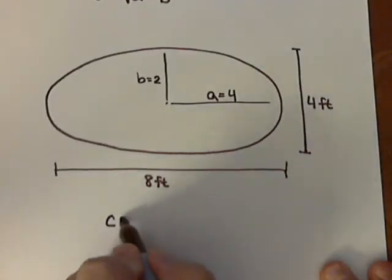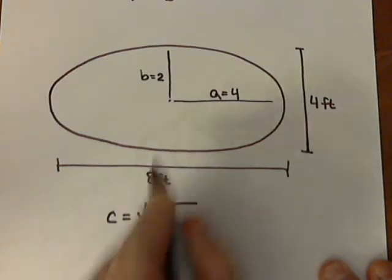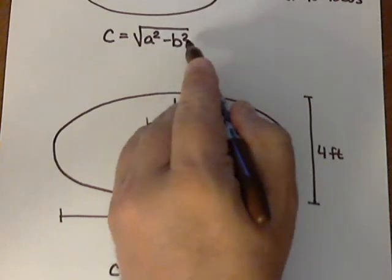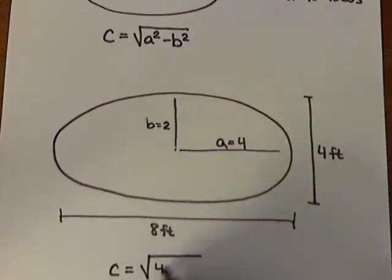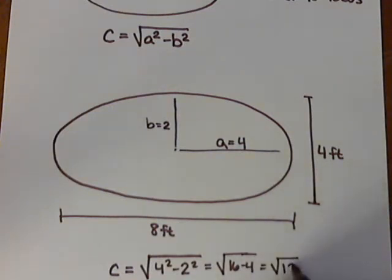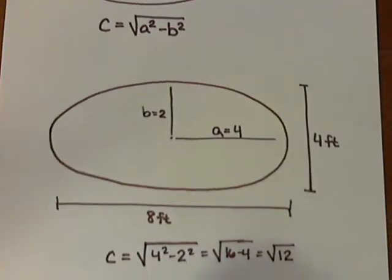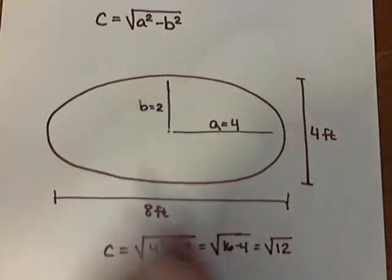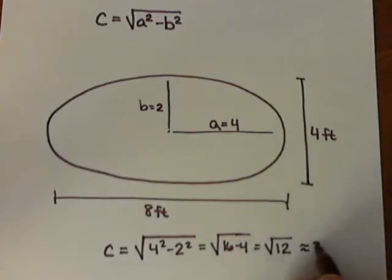Then, to calculate the c value, the c is going to be the square root of a squared minus b squared. So, we just plug our a and b into this formula. So, if we simplify that, we get 16 minus 4, which is 12. And, since you generally don't measure in square roots, we'll go ahead and put that in the calculator and convert it, and it comes out about 3.5 feet.